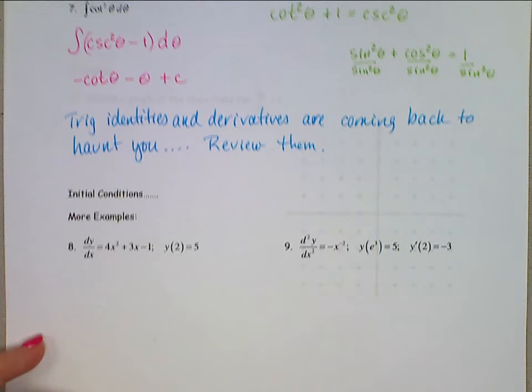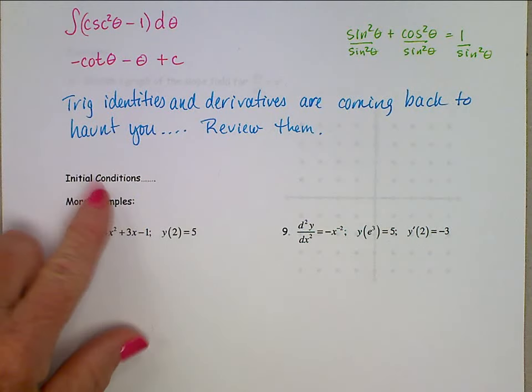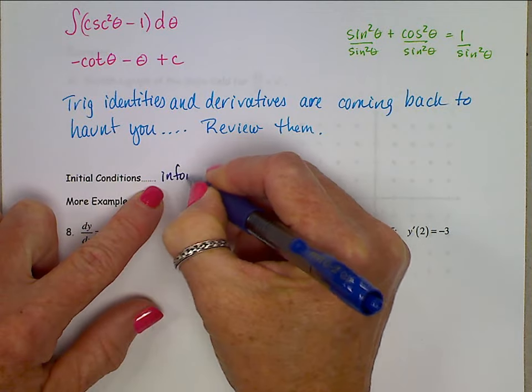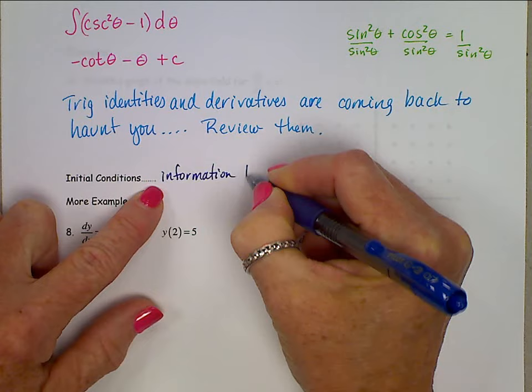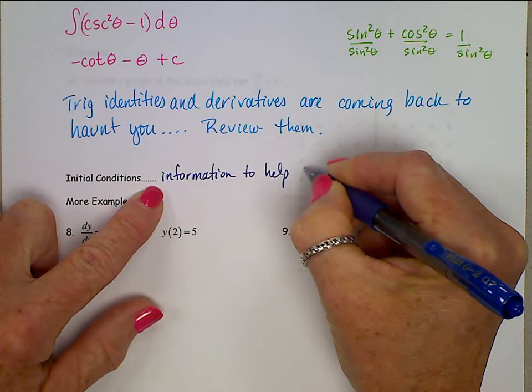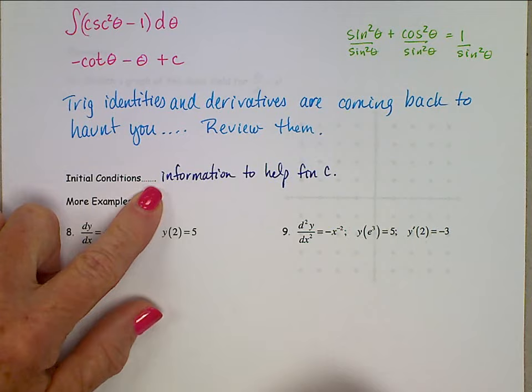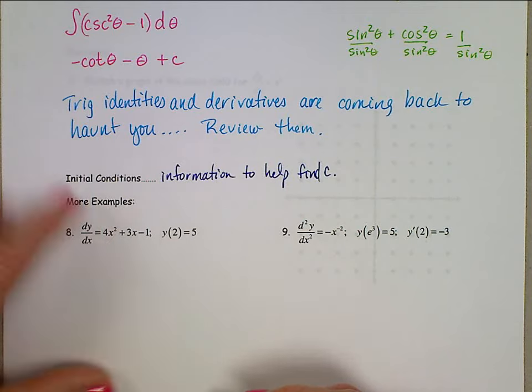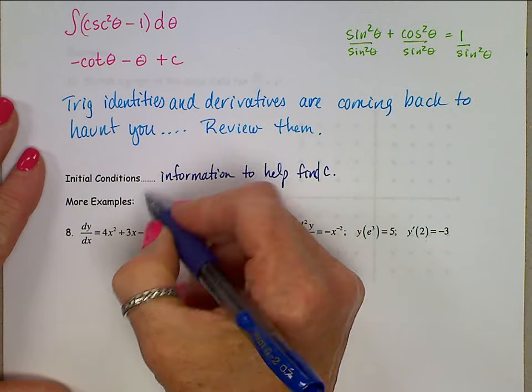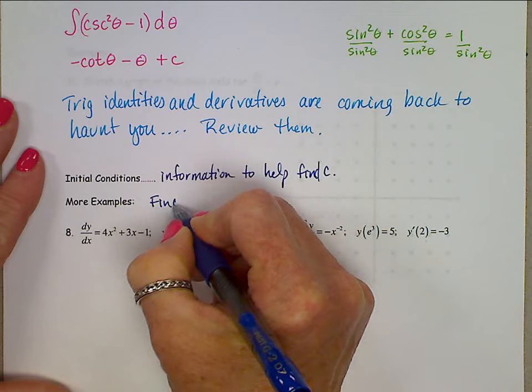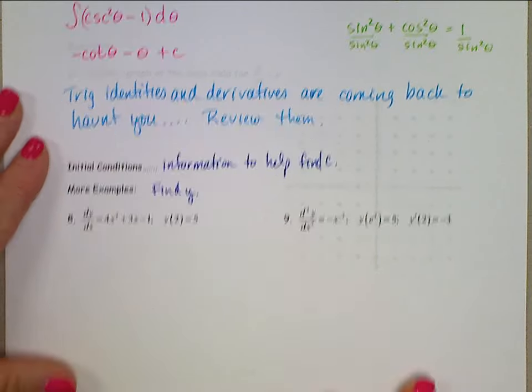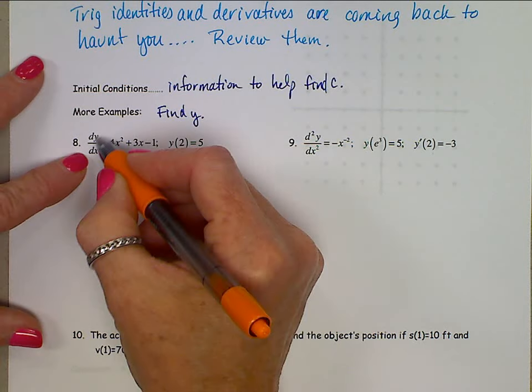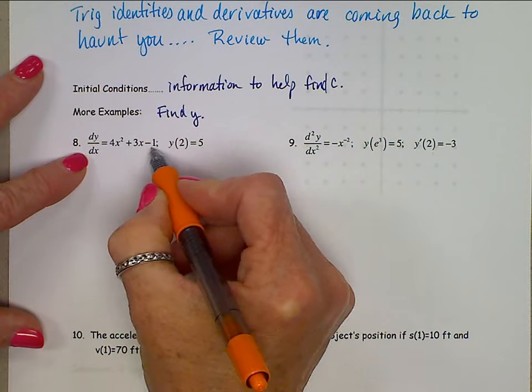All right, moving on here then, looking at some initial conditions. Initial conditions is information to help find c. More examples. And looking at this, I realize that I forgot to tell you what to do on these examples. On these examples, I want you to find y. When we look at number 8, we see dy dx is 4x squared plus 3x minus 1, and y of 2 is 5.